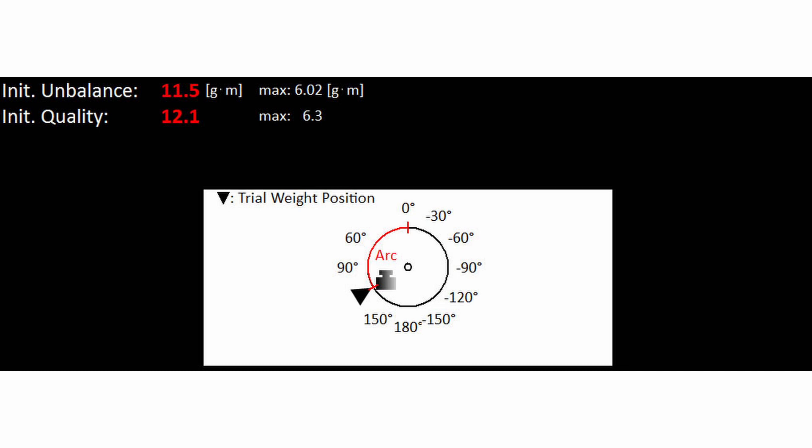This screen appears after trial run. I can display for example this. The residual unbalance is 11.5. It is too high. Permissible unbalance is just 6.02. It means that we should balance this rotor. This is the initial grade 12.1. It is higher than required grade 6.3. We should balance.